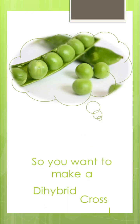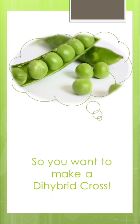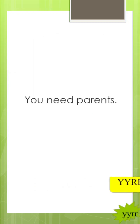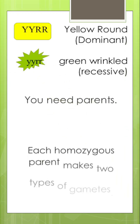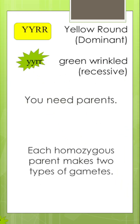What are the possible genotypes and phenotypes for a cross between yellow round peas and green wrinkled peas? First things first, yellow round peas are dominant, and green wrinkled peas are recessive.